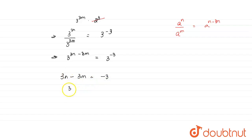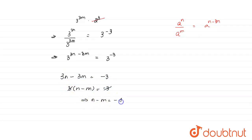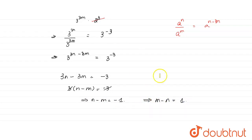Taking 3 as common, n minus m equals minus 1. Multiplying the whole equation by minus 1, we get m minus n equals 1. This is what we had to prove. Hence, proved.